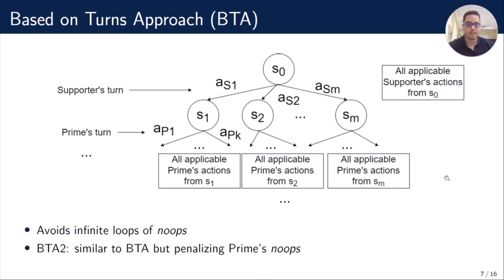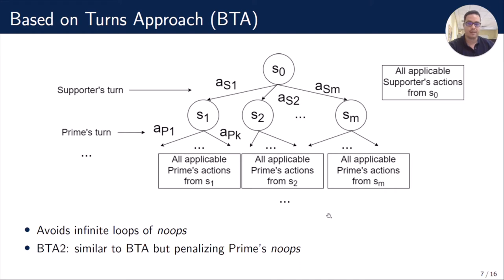Here we can see the search tree of BTA. In the initial state, we have all applicable Supporter actions from the initial state. After that, we have all applicable actions of Prime from the state reached by the simulation of the Supporter's action, and so on. Supporter avoids infinite loops by preventing execution of a no-operation when the last action executed by Prime in the real environment is also a no-operation. We also have a second version of BTA, called BTA2, which is similar to BTA but penalizes Prime's no-operation. Remember that Prime only executes a no-operation when it is not able to compute a plan, which could happen infrequently.